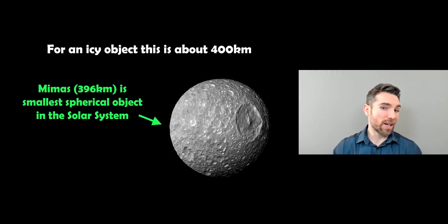Now for an icy object it's thought to be around about 400 kilometers and a good example of that is Mimas. So Mimas is a moon of Saturn and it's just under 400 kilometers in size and it's mostly icy, and it's the smallest spherical object we know about in the solar system at the moment and it's pretty much at the limit we expect for an icy object.